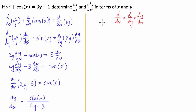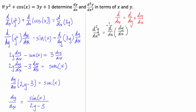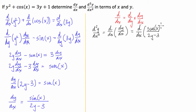Now on to the second part where we're looking for the second derivative, d²y/dx². d²y/dx² is simply equal to d/dx of dy/dx — we're finding the derivative with respect to x of the original first derivative we just found. So we're going to have d/dx of sine of x over 2y minus 3.